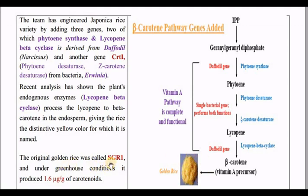Golden rice was initially called GR1 (Golden Rice 1). In greenhouse conditions, it produces 1.6 micrograms per gram of carotenoid — meaning 1 gram of rice contains 1.6 micrograms of vitamin A precursor. If a person wanted to fulfill their daily vitamin A requirement from GR1 alone, they would have to consume 10 kg of golden rice per day, which was impractical. This was because the beta-carotene content was very low.